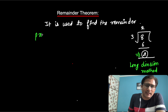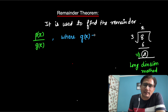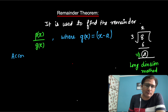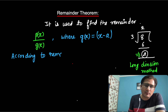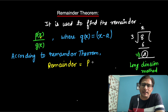The Remainder Theorem applies to polynomials. If any polynomial P(x) is divided by G(x), where G(x) is linear — meaning G(x) is in the form x minus a — then according to the Remainder Theorem, the remainder is equal to P(a), where x in the dividend is replaced by a.